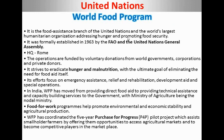Now let's look at the World Food Programme. The World Food Programme is the food assistance branch of the United Nations. It was established in 1961 and formally operational in 1963. The headquarter is in Rome, Italy. It was organized by the United Nations General Assembly and FAO.